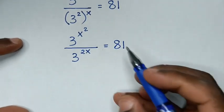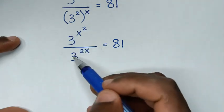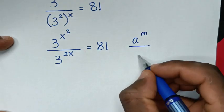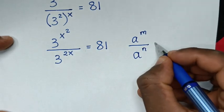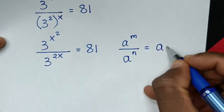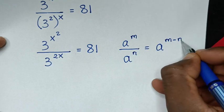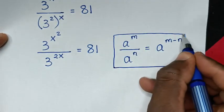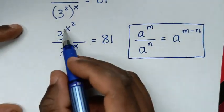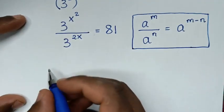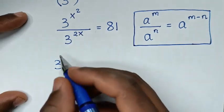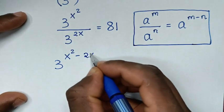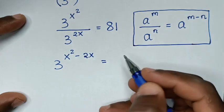Now, division of these exponents is in the form of a power of m over a power of n, which equals a power of m minus n. So applying this, the division gives us 3 to the power of x square minus 2x, equal to 81.